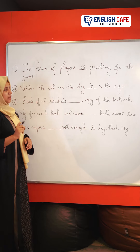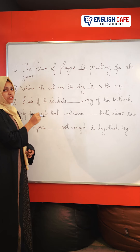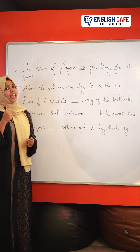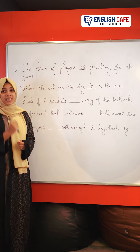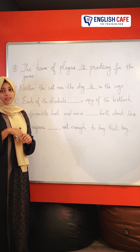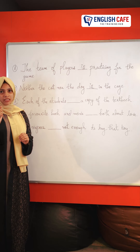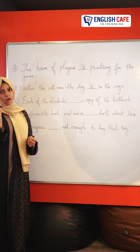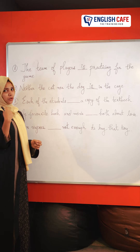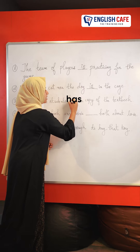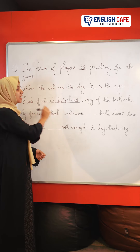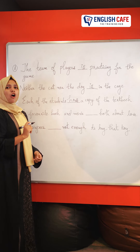This is a singular subject. So: each of the students dash a copy of the textbook. What subject is this — singular or plural? 'Each of the students' takes a singular verb, because 'each' refers to individual members one at a time. So, each of the students has — not have — a copy of the textbook. It is 'has' because it is a singular subject, and a singular subject takes a singular auxiliary verb.